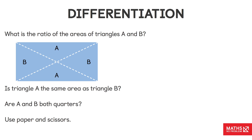I could have asked that in a different way. I could have said: is triangle A the same area as triangle B? That's one way of asking it — taking out the ratio part. Or I could say: are they both quarters?